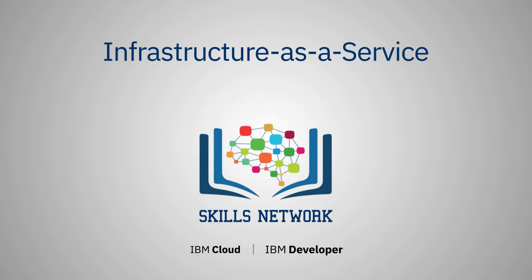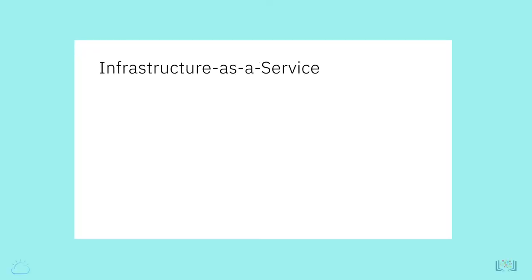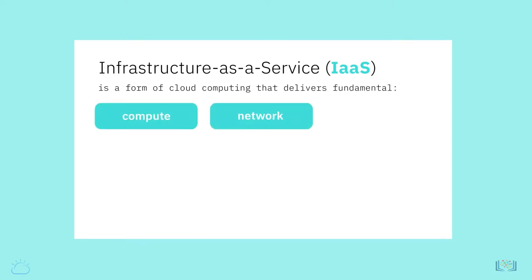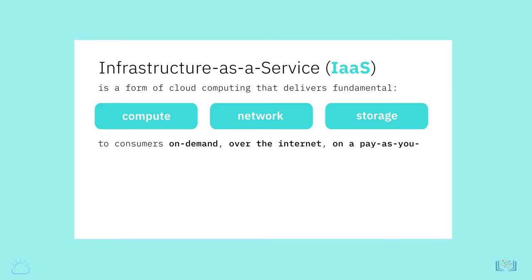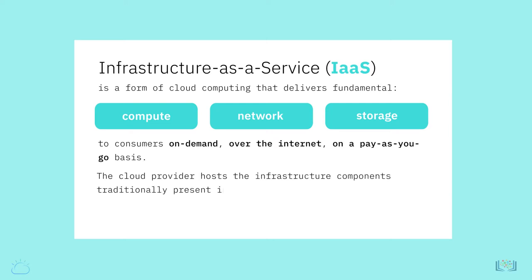In this video, we will discuss the Infrastructure as a Service model in more detail. Infrastructure as a Service, commonly referred to as IaaS, is a form of cloud computing that delivers fundamental compute, network, and storage resources to consumers on demand over the internet on a pay-as-you-go basis. The cloud provider hosts the infrastructure components traditionally present in an on-premises data center as well as the virtualization or hypervisor layer.